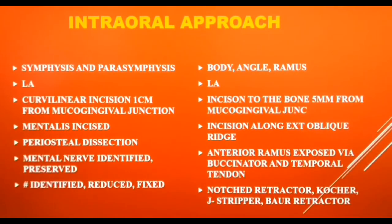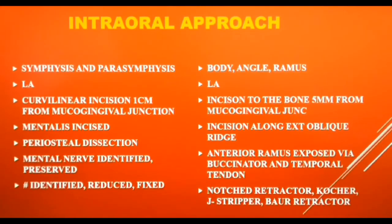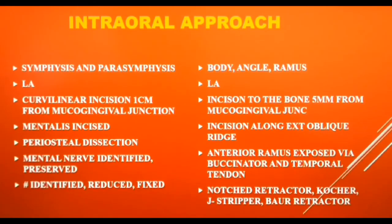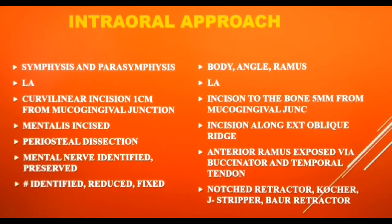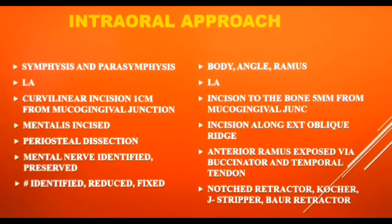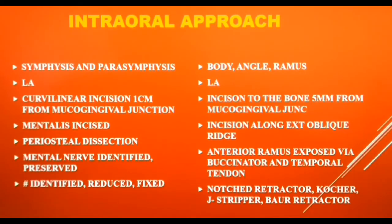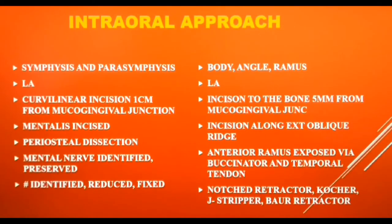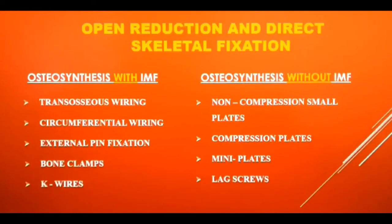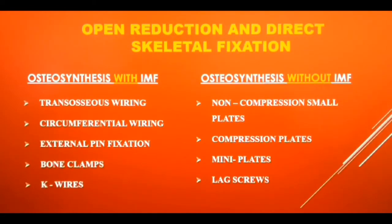In body, angle, and ramus fractures, the incision is made 5 mm from the mucoginigval junction, extending anteriorly from the first molar region and along the external oblique ridge as high as the mandibular occlusal plane. Extending the incision higher risks prolapsing the buccal fat pad into the surgical field. The anterior surface of the ramus can be exposed after dissecting through the buccinator and temporalis tendon. A notched retractor and a Kocher's clamp can be used in the coronoid region; a J-stripper can elevate the masseter, and a bore retractor can be used in the sigmoid notch and antegonial notch.